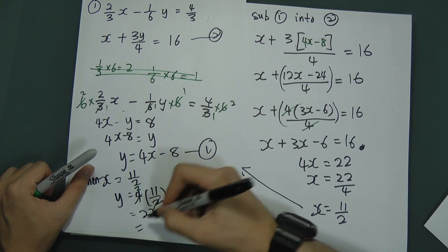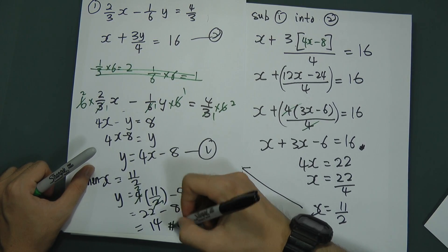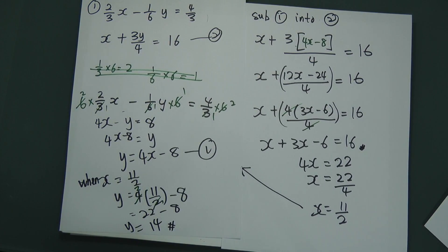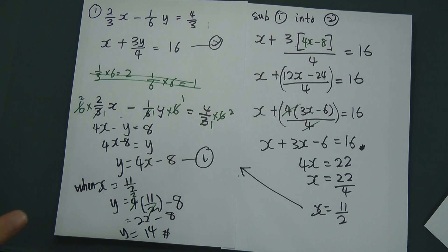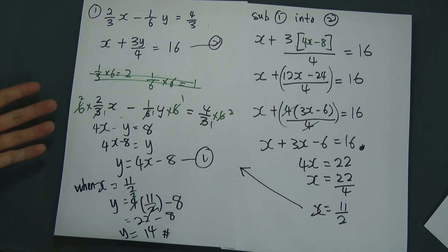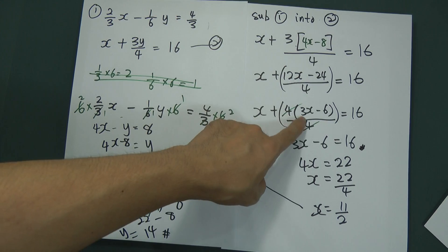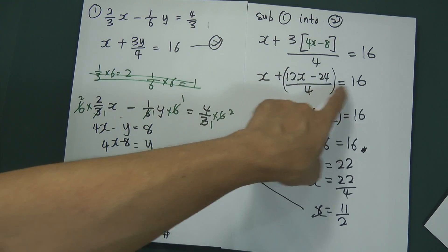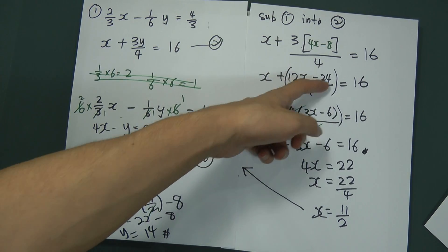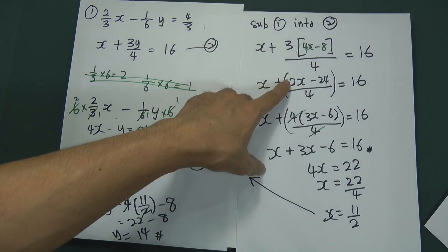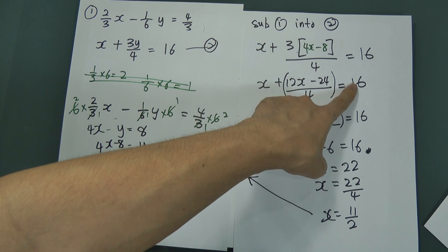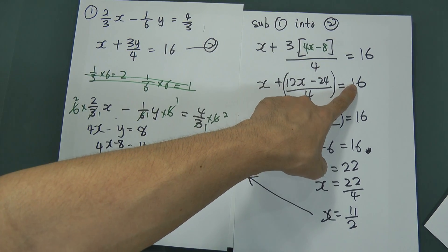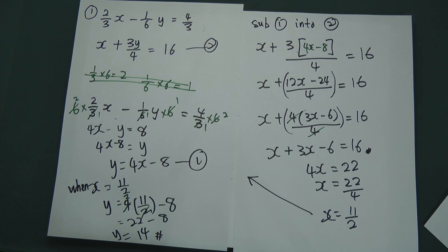So even when the simultaneous equation involves fractions, we get x equals 11 over 2 and y equals 14. The key technique is knowing how to handle the fractions. If you didn't want to factorize, you could also multiply everything by 4 directly — the divided-by-4 disappears, giving you 4x plus 12x minus 24 equals 64. Either way works, so just remember these approaches.